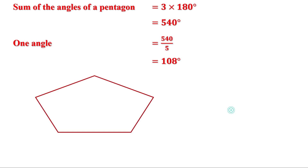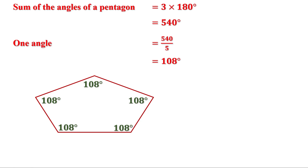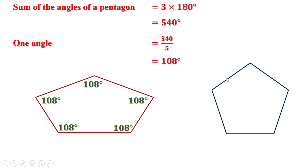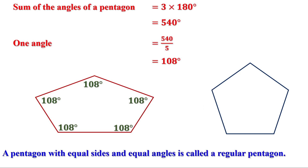There are pentagons where all angles are equal to 108 degrees but the sides need not be equal. And there are pentagons where all sides are equal but the angles need not be equal. But there are pentagons where all sides are equal and all angles are equal. Such pentagons are called regular pentagons. That means in a regular pentagon, all angles are equal and all sides are also equal.